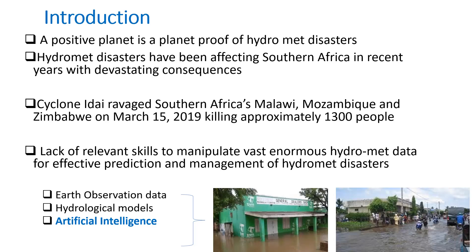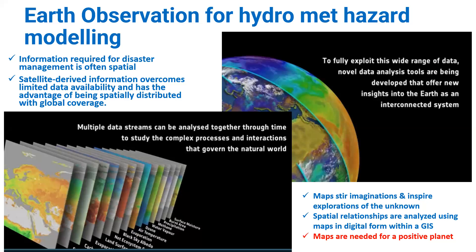Here I'm presenting a case where, if we have earth observation data, if we have hydrological models, and we use artificial intelligence — that smart interface — we can achieve a positive planet: a planet that is proof against hydrometeorological disasters.